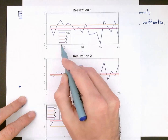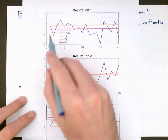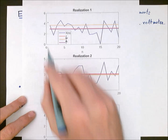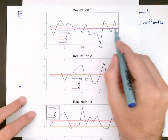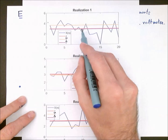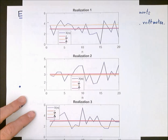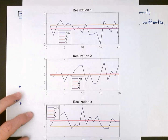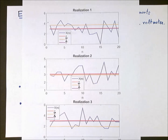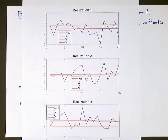Our second estimator, the sample mean represented in purple, is much more accurate, at least for these three realizations. On the plot we can almost see no difference between the true value of z and its estimate, and the same holds for each of the realizations. Already with these three realizations, we get the impression that Estimator 2, the sample mean, is going to be much more accurate than Estimator 1. Next, we are going to compute the bias and MSE of these two estimators and show why Estimator 2 is better.